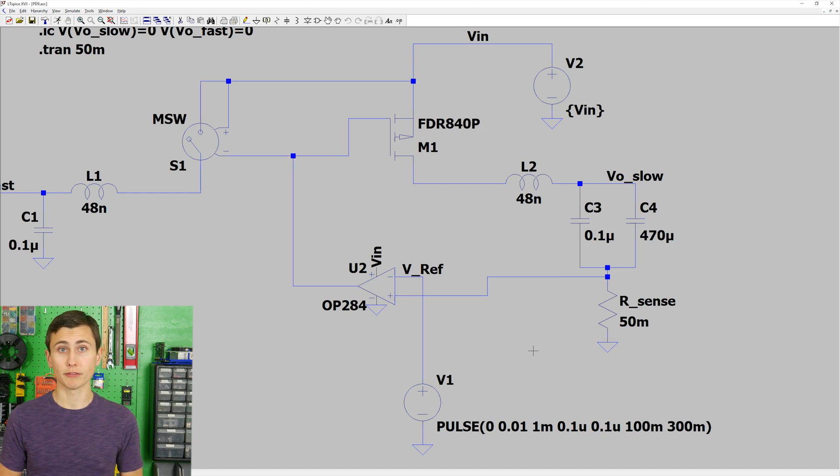In other words, we're operating the FET in the triode region. By using the op-amp to compare the output current translated into voltage, which is then capable of driving the FET while establishing negative feedback, we have implemented a linear current regulation circuit.